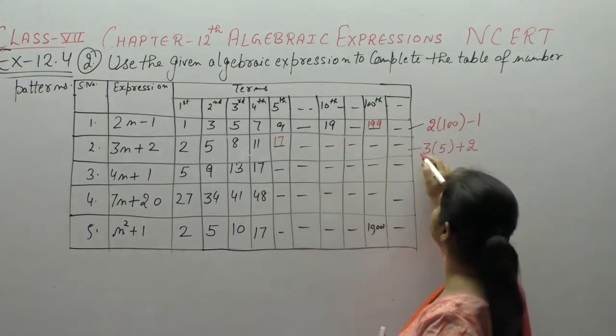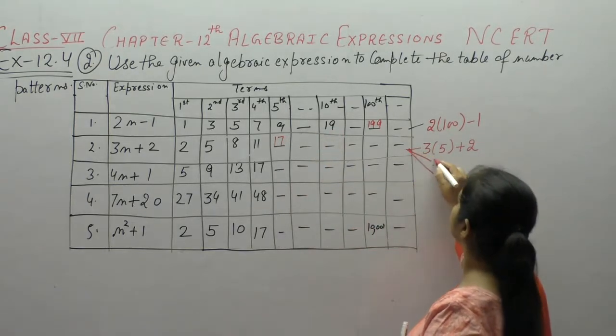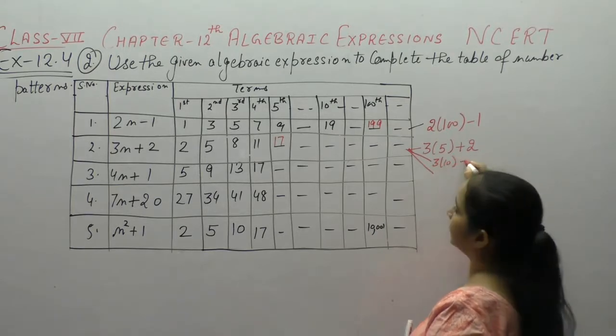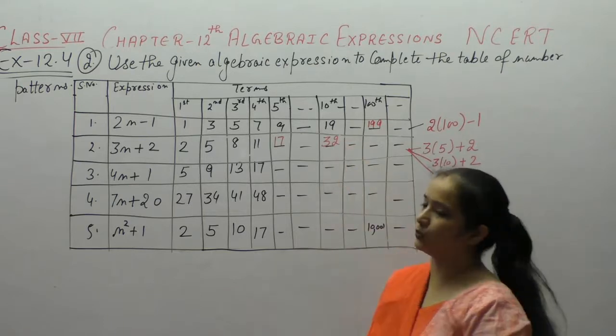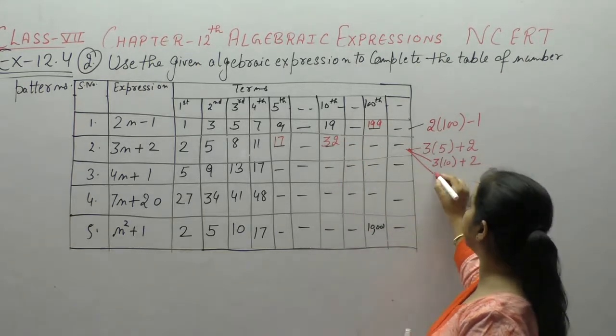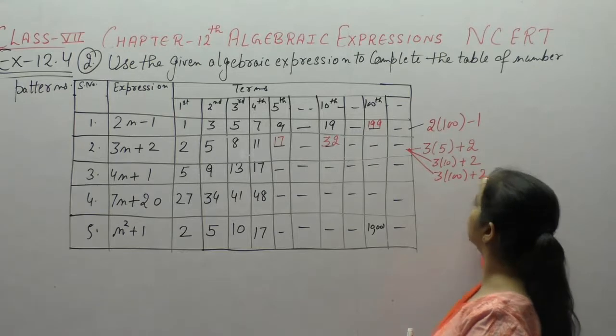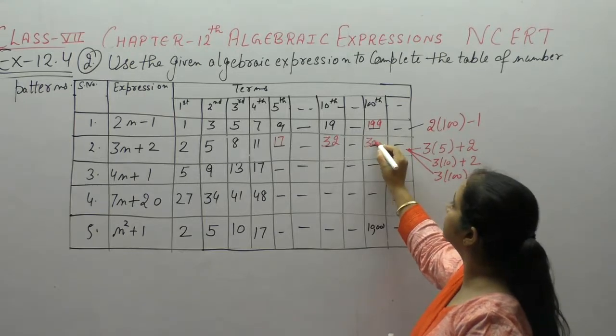Now, n की value इसी में 10 put करनी है? 3 into 10 plus 2, 30 plus 2, 32. n की value put करनी है 100, plus 2, 302.